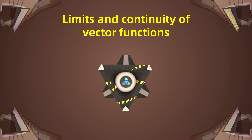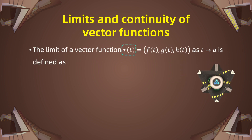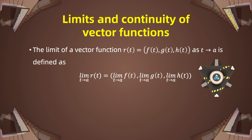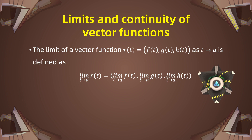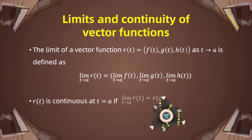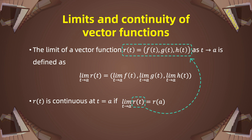We can define the concepts of limits and continuity of vector functions. Suppose our vector function is R of t and that it has three component functions f, g, and h. We define the limit of R of t as t approaches a as the limit of each component as t approaches a. So we define the limit of R component-wise. Now that we have the notion of limits, we can define continuity at a point A. R of t is continuous at A if the limit as t approaches a of R is equal to R of A. This function R of t is a vector — the vector whose components are f of t, g of t, and h of t. R of A is also a vector; they are not real numbers.